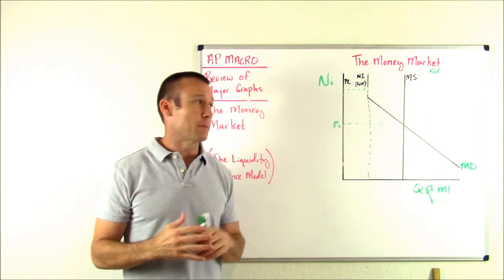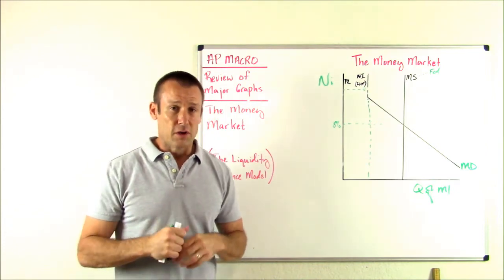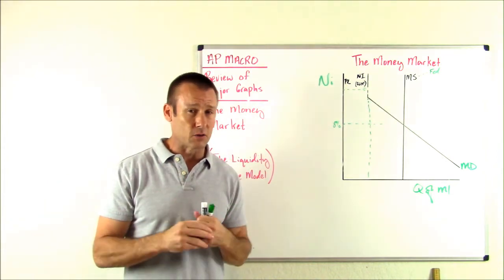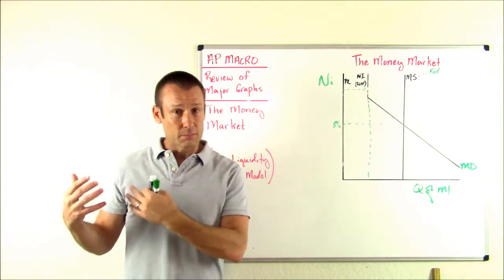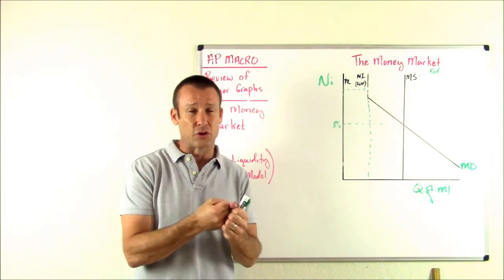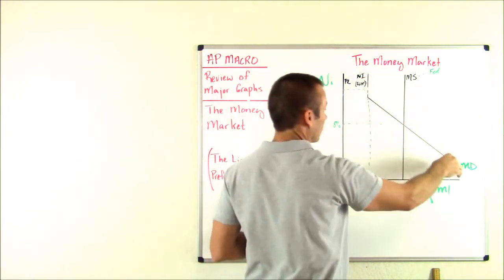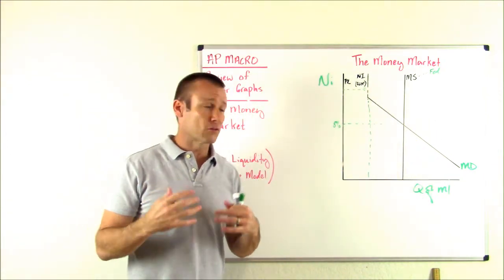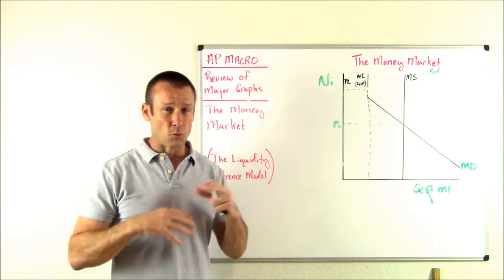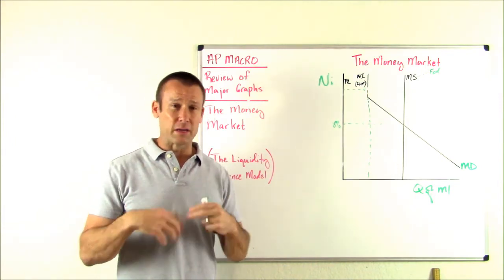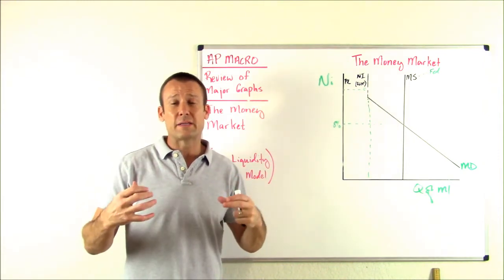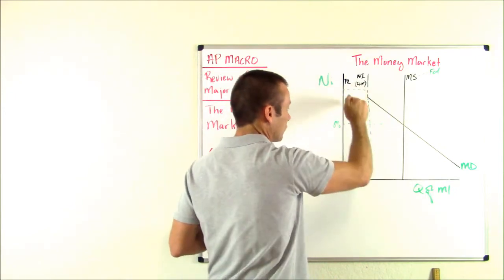A couple of other things that can shift the money demand curve: credit card usage — if we start using more credit cards, we need less money because credit cards are a line of credit, not money. We rely on them for cushion and convenience, so money demand shifts left. Also, technological change — more ATM machines make it easier to get money, so we need to hold less money for convenience. Again, money demand shifts to the left.